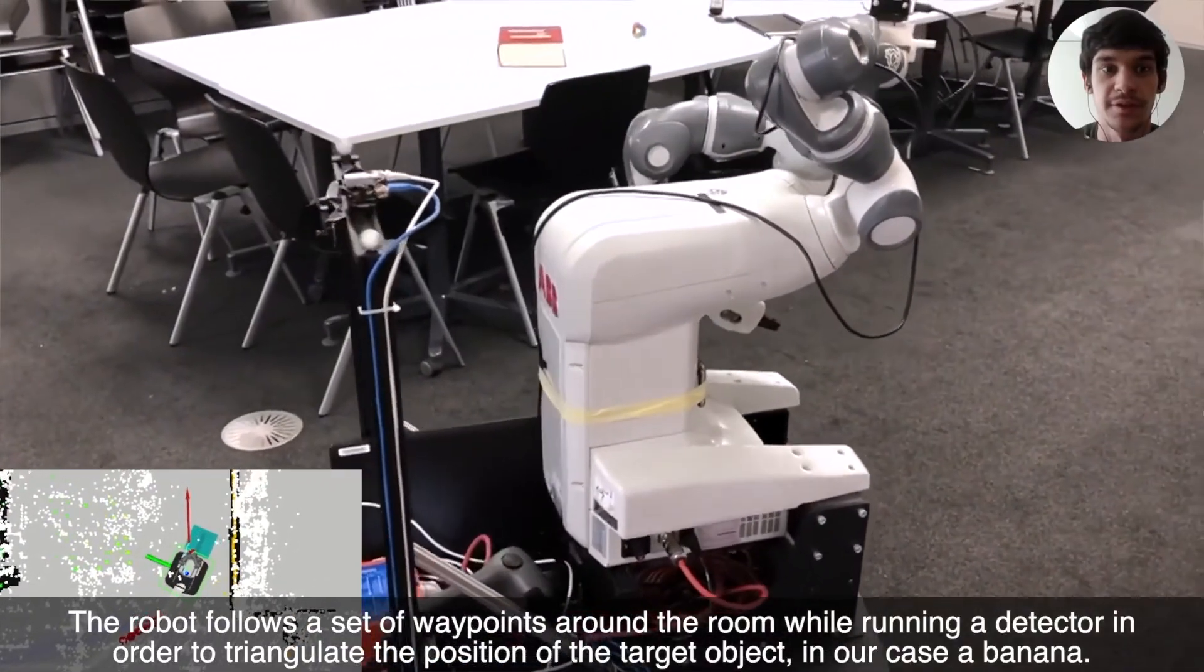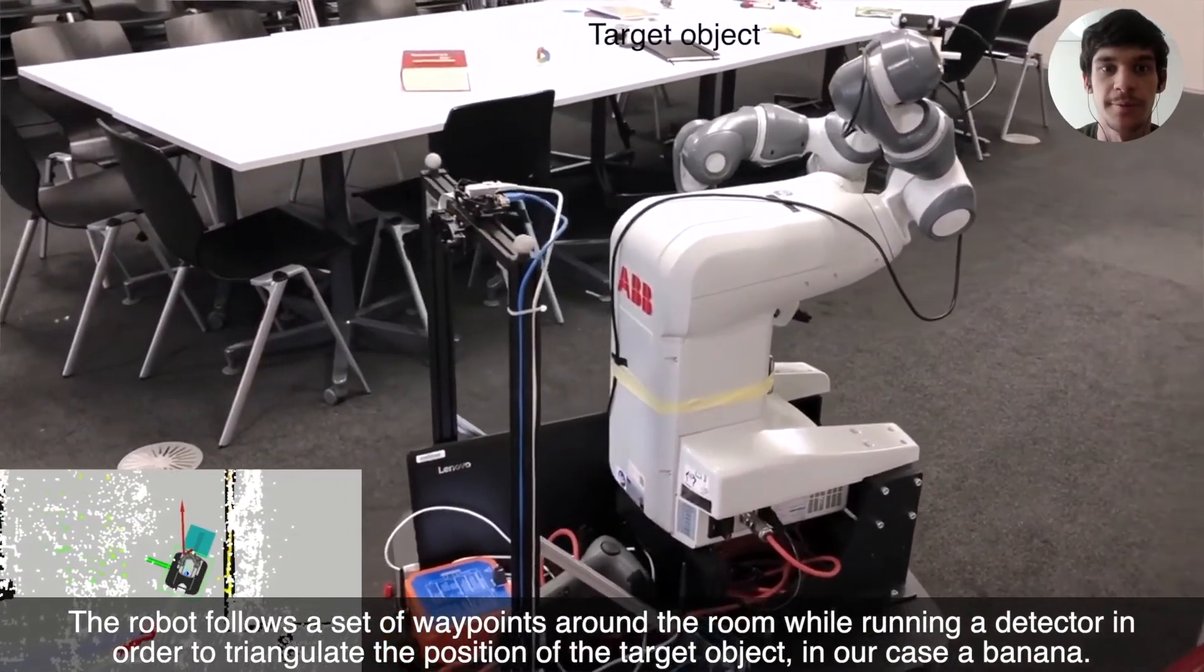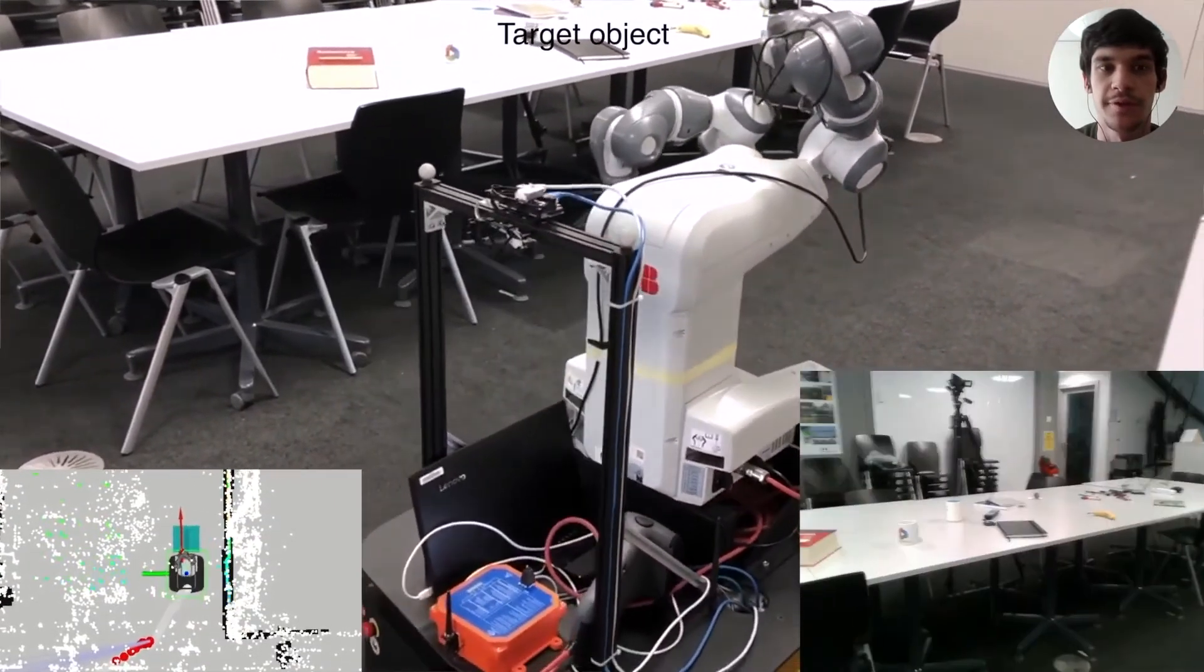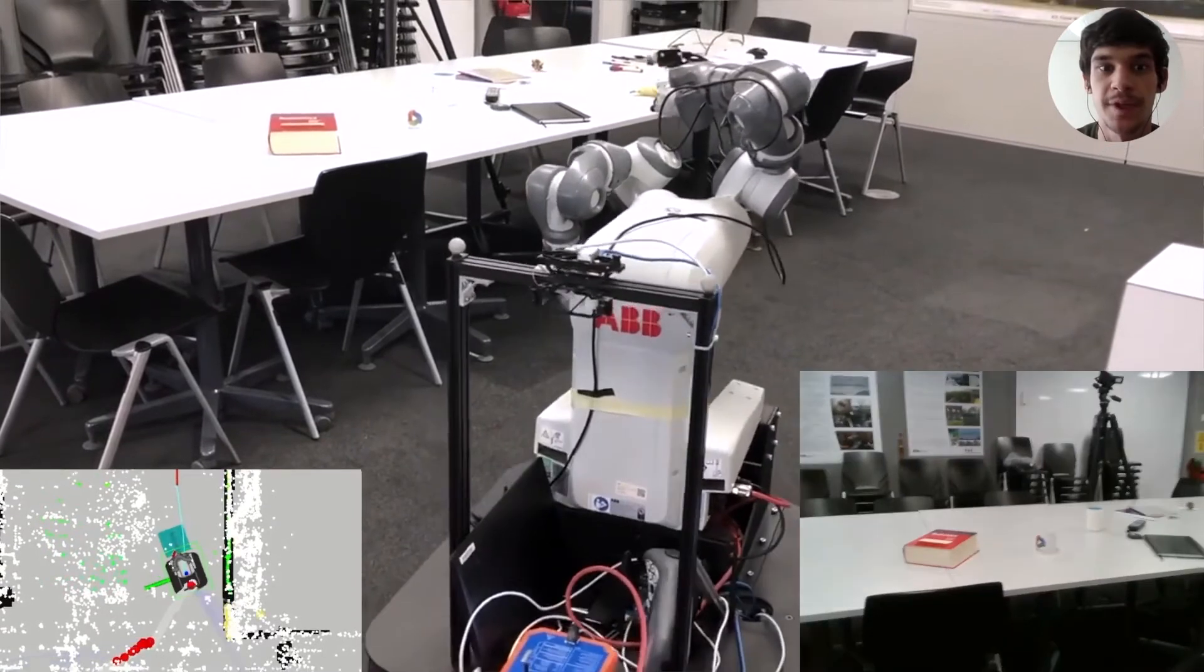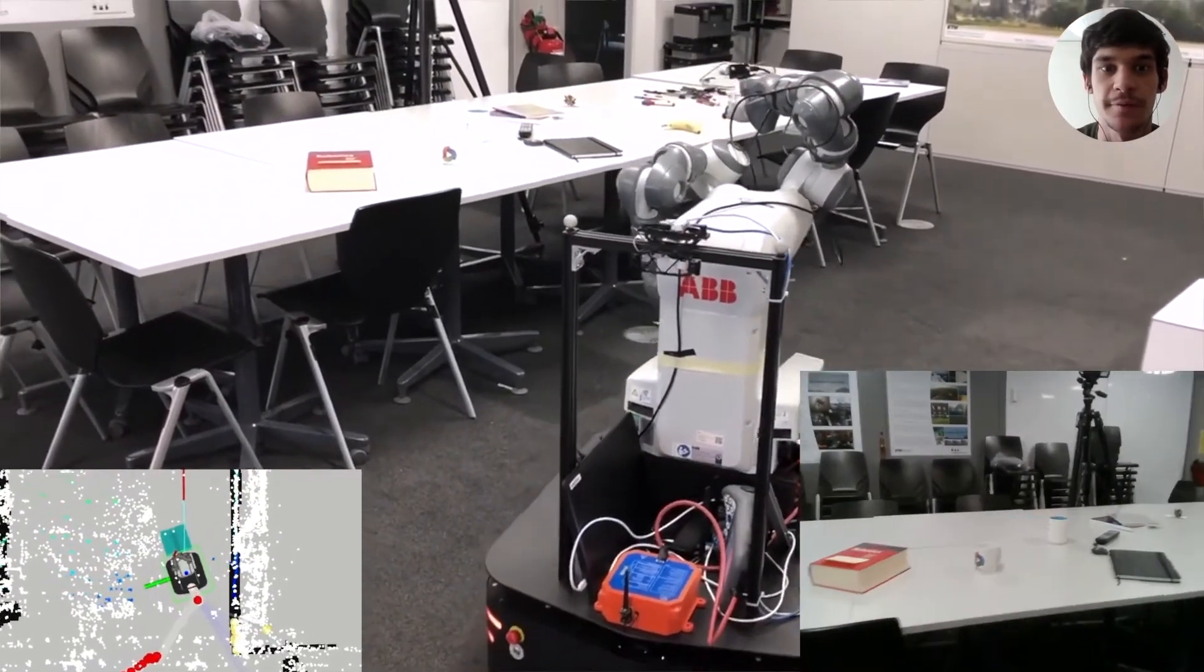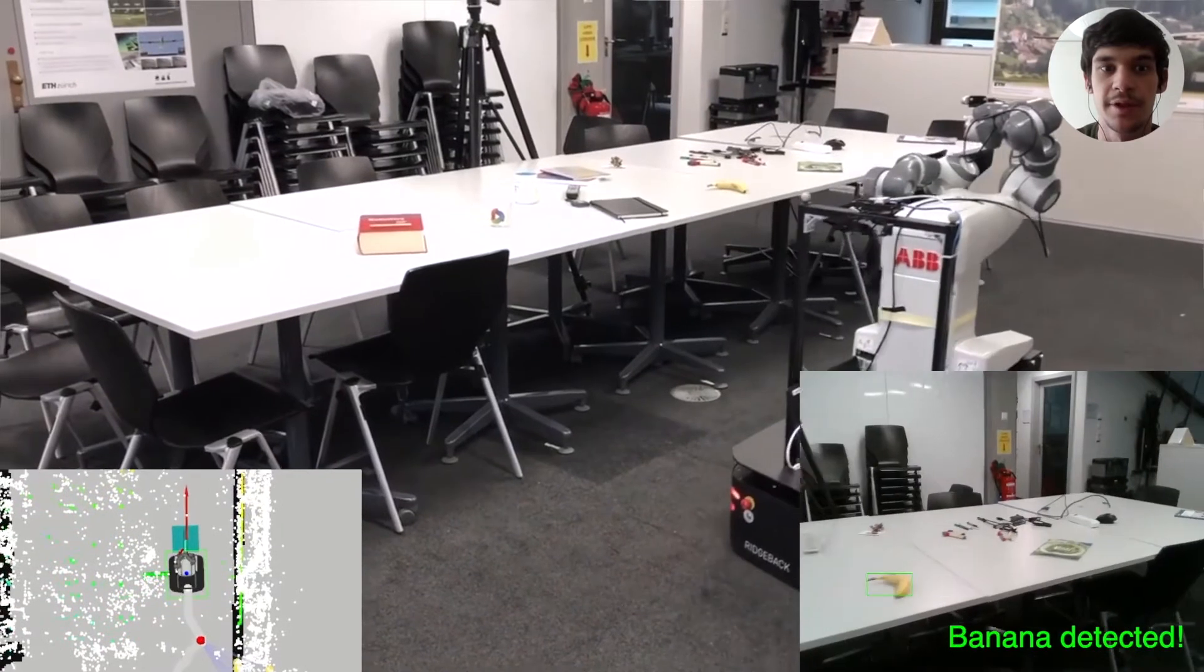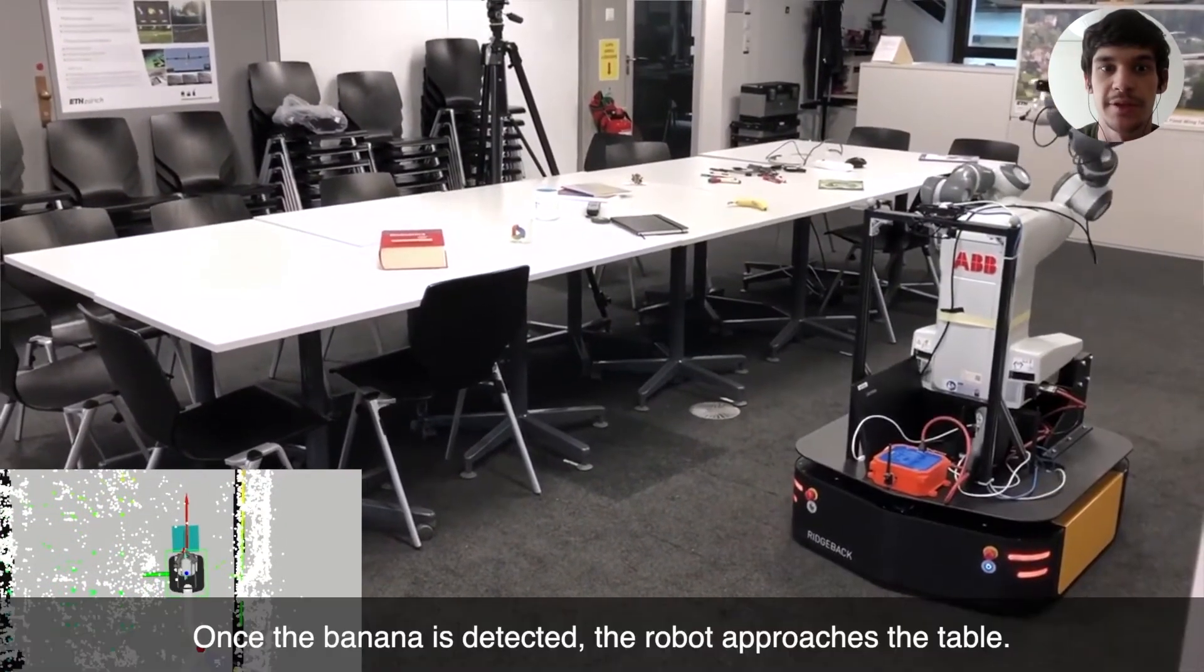For this, images from the wrist camera shown in the bottom right are processed using a YOLO v3 object detection network. Detections are tracked over frames, and once enough observations are available, they are projected into 3D space using the camera poses and triangulated to find the target object position.